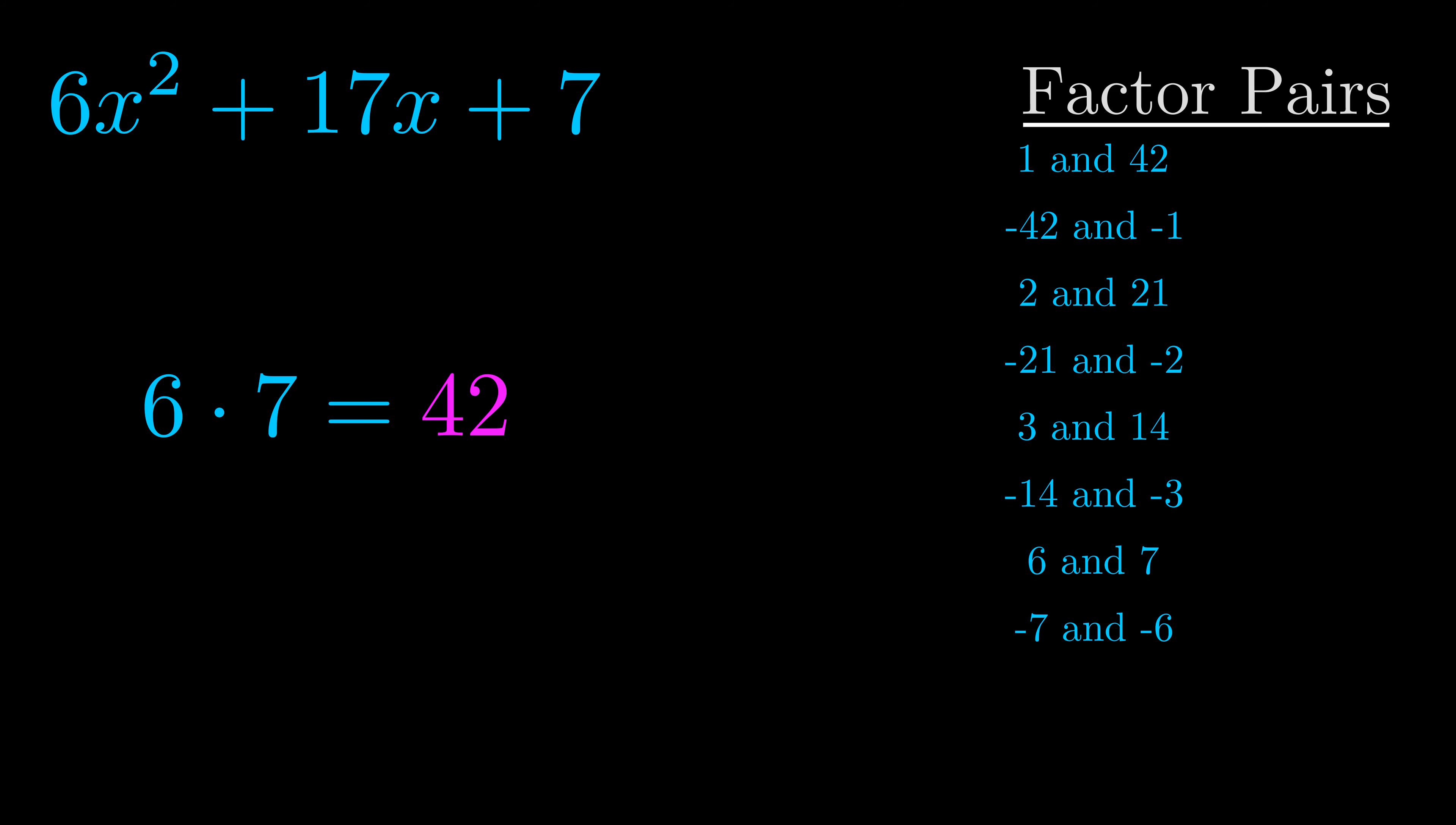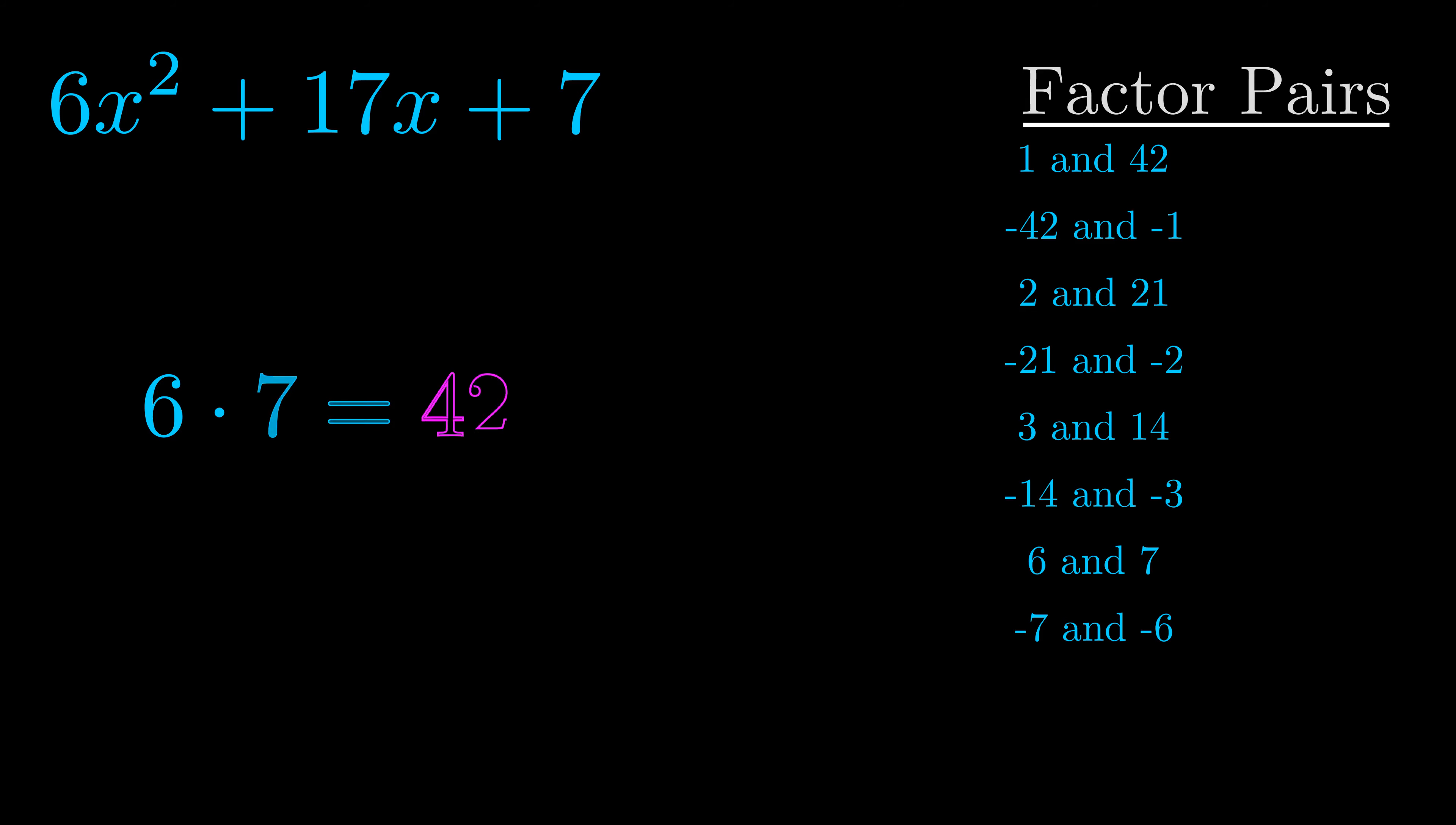Now once you have these factor pairs the goal is to find which of these pairs adds to the b value. The b value is the coefficient on the x term. That's the middle term, the one that we haven't done anything with yet. And really this is the only factor pair that we need.